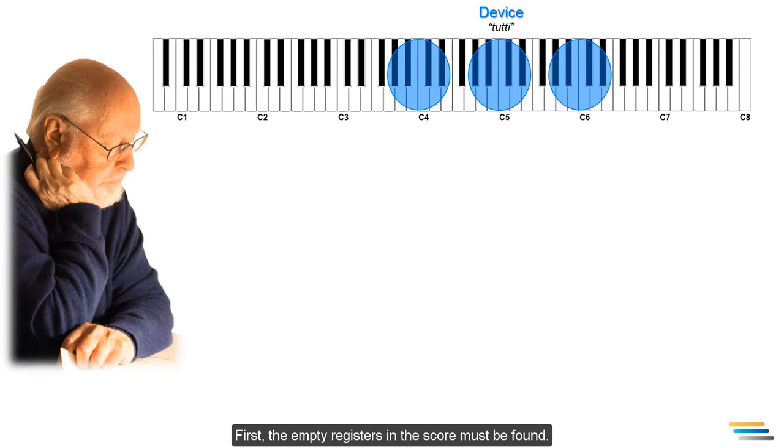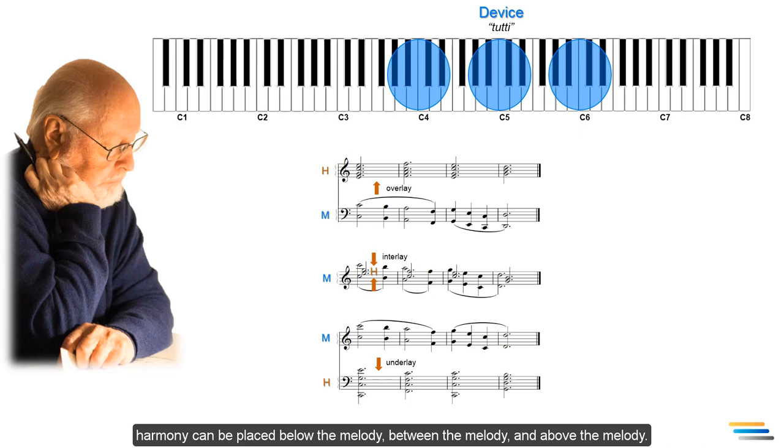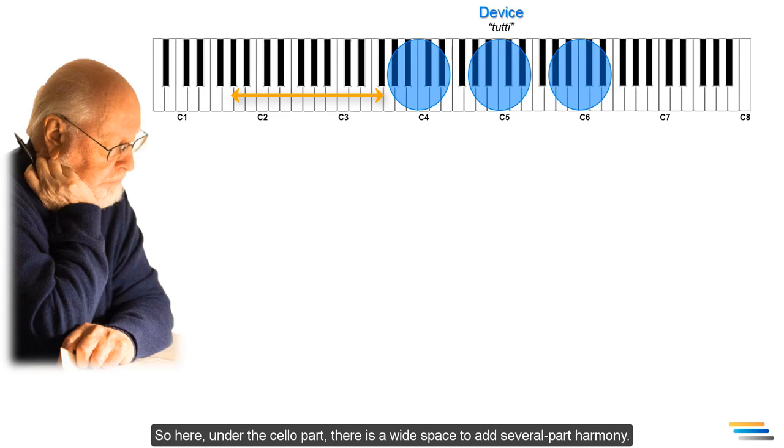First, the empty registers in the score must be found. As I talked about in our previous lectures, harmony can be placed below the melody, between the melody, and above the melody. So, here, under the cello part, there's a wide space to add several-part harmony.